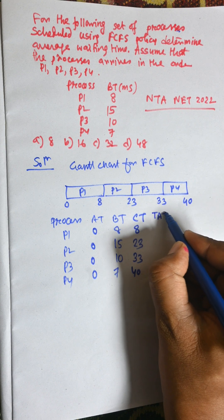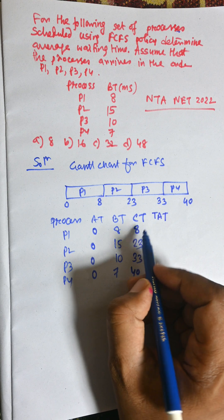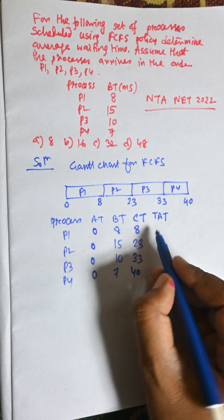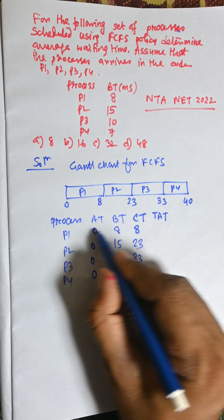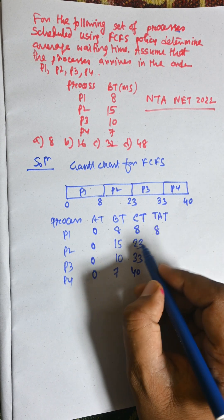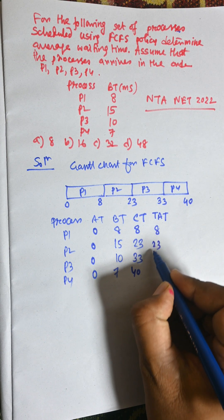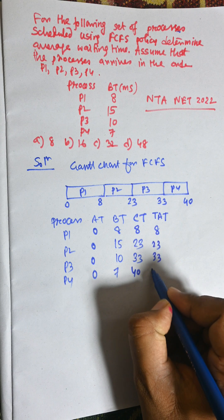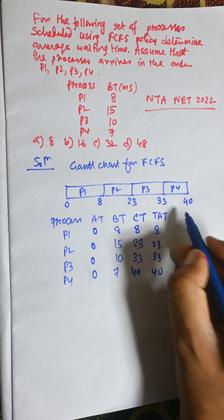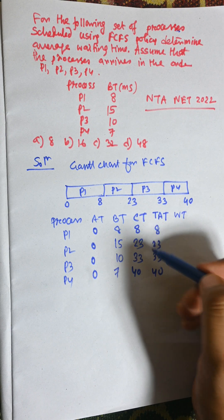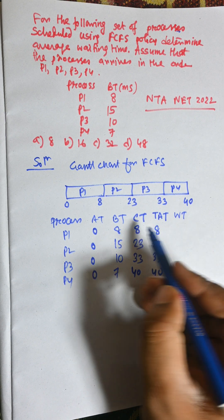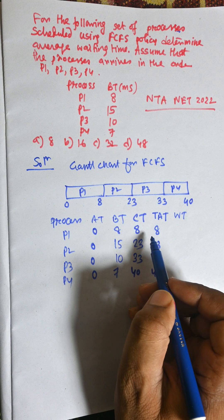Next, we calculate turnaround time. Turnaround time equals completion time minus arrival time. Since arrival time is 0 for all processes, turnaround times are: P1 = 8 minus 0 = 8, P2 = 23, P3 = 33, and P4 = 40.